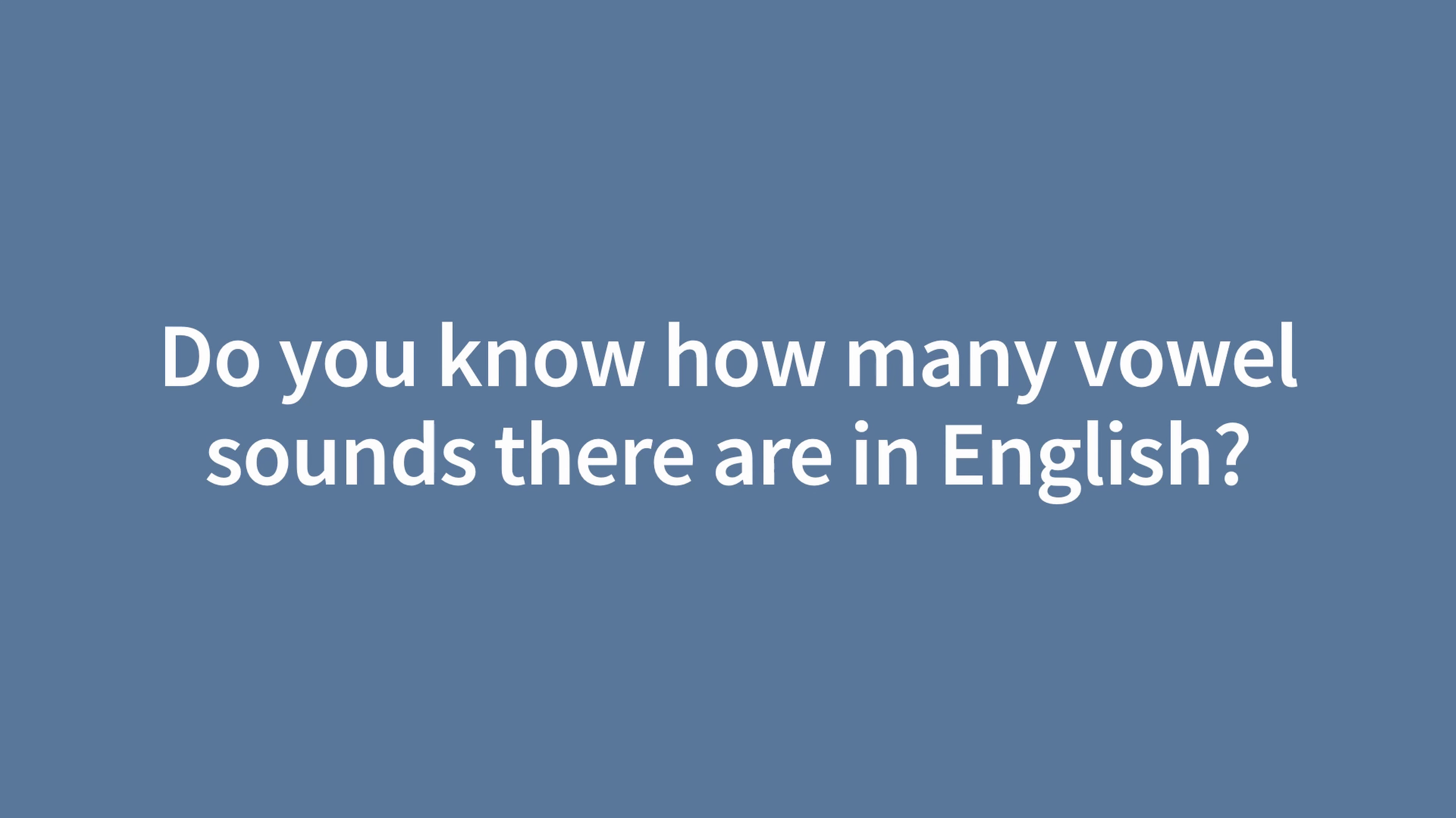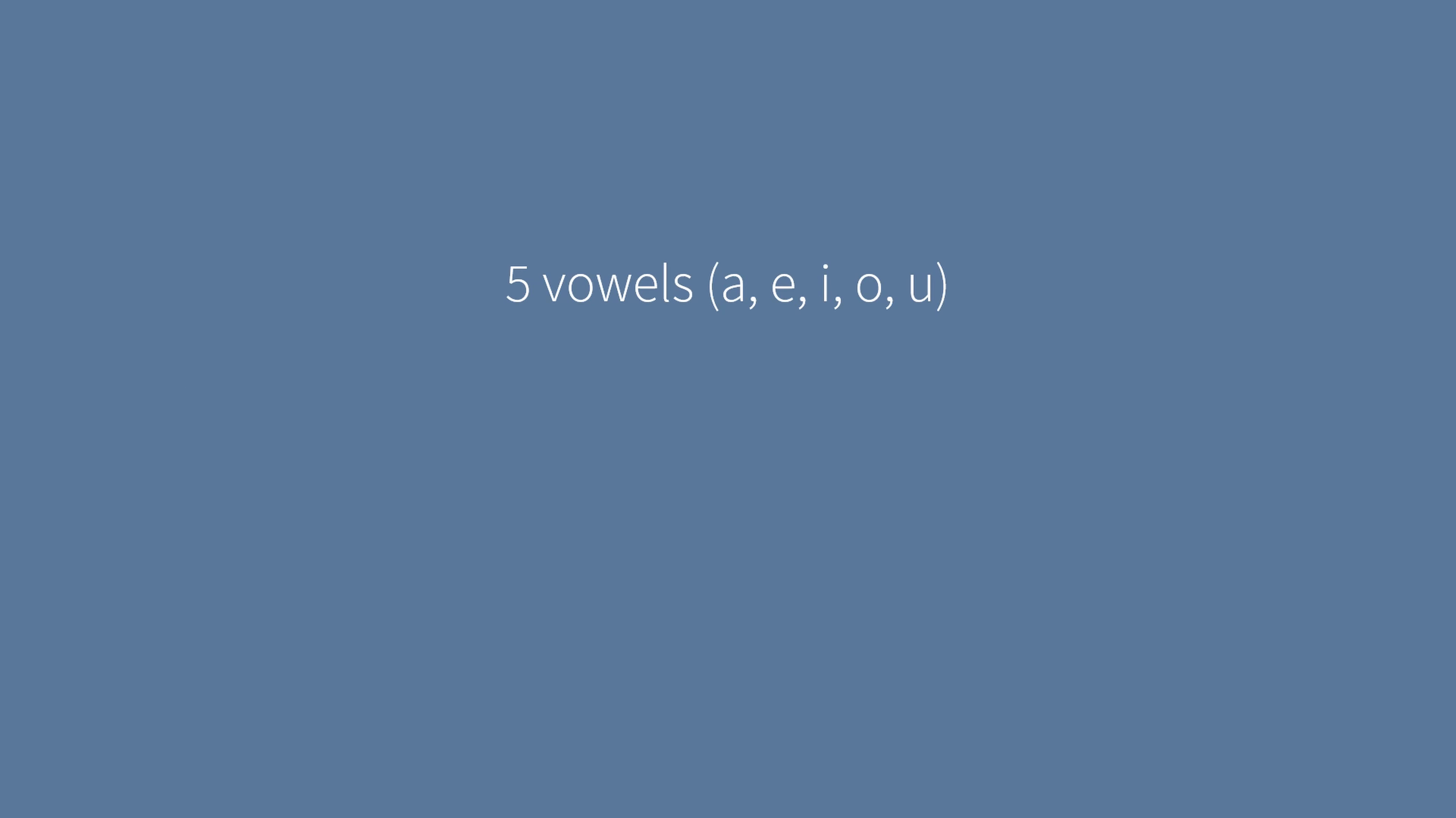Do you know how many vowel sounds there are in the English language? Though there are only 5 vowel letters, A, E, I, O, U, English has distinct pronunciations for each letter or letter combination.